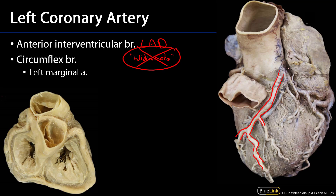The other branch is the circumflex — 'circumflex' because it's going to wrap around to the diaphragmatic surface of the heart. Here we can see the pulmonary trunk has been reflected down, and the ascending aorta is still visible. Coming from that circumflex branch around, there is a nice left marginal artery. So here is the anterior interventricular branch, there's the circumflex branch, and then there is the left marginal artery — the only branch with a named 'artery' designation among all the coronary artery branches.